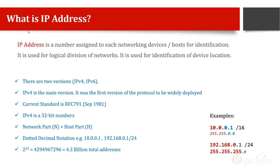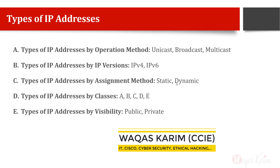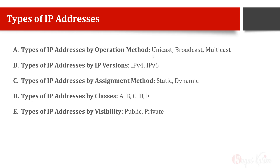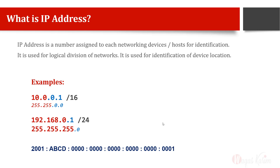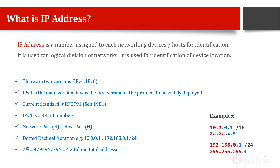That's all about IP addresses and their types. In another lecture I have also explained other types and classifications — we can divide IP addresses based on operation method, their versions, assignment method such as static or dynamic, by classes, and by visibility. Those are five different classification methods which we have already discussed in another video. I hope this was informative. If you have any questions, you can write in the comment section and I'll be happy to make another video or answer your questions. Thank you for watching.